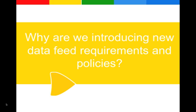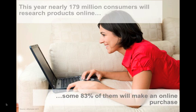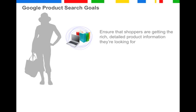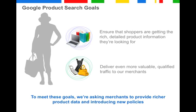So why are we introducing new data feed requirements and policies? This year, nearly 179 million consumers will research products online, and some 83% of them will make an online purchase. We from Google Product Search want to ensure that shoppers are getting the rich, detailed information they're looking for. This has great implications for you, our merchants, as we want to deliver even more valuable and qualified traffic to you. To meet these goals, we're asking merchants to provide richer product data and are introducing new policies.